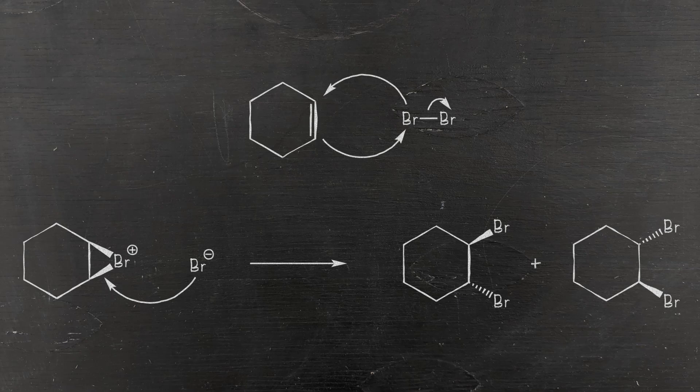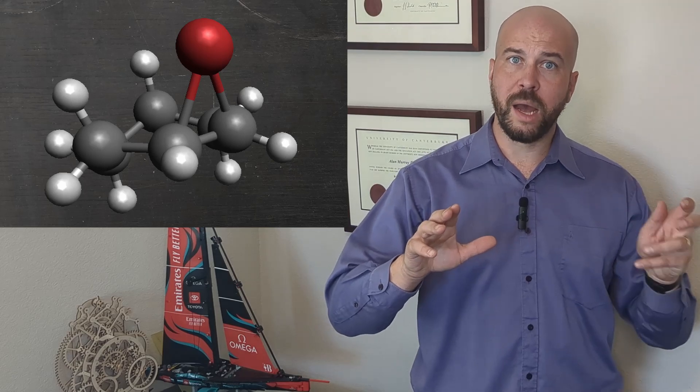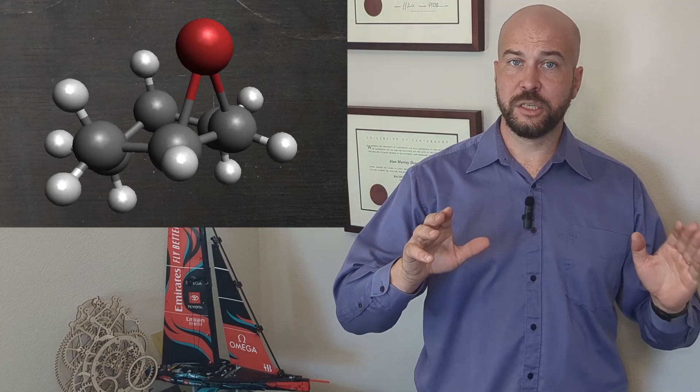Before I explain the second half of this question, I first want to talk about a different reaction: the reaction of bromine with an alkene. When bromine reacts with cyclohexene, the first step does not generate a carbocation. Instead, a charged cyclic species known as the bromonium ion is formed.